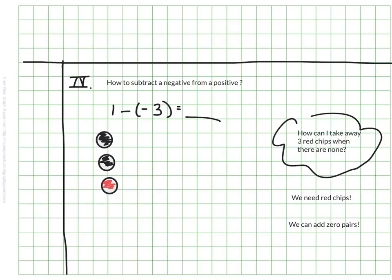So here I've added a zero pair. One black and one red. I'm just adding zero. I'm not changing the value. This board still shows positive one as a total. Here's another zero pair. And here's another. I now have three red chips that I can remove. I could take this one off. I can take a second one and a third red chip off.